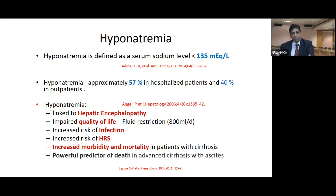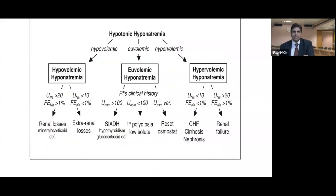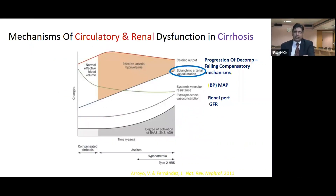Hyponatremia increases morbidity and mortality in patients with decompensated cirrhosis. It is actually a very powerful predictor of death in advanced cirrhosis with ascites. It is hypervolemic hyponatremia — the volume is much higher.